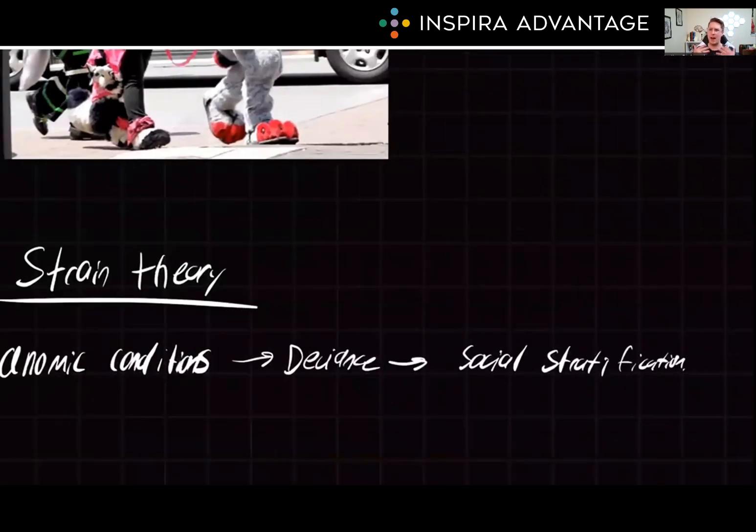And finally, we have strain theory that kind of comes out of talking about anomie. Strain theory focuses on how anomie conditions can lead to deviance and in turn reinforce social stratification. When individuals feel disconnected from society or unable to achieve their goals through legitimate means, they may turn to deviant behavior. Crime. For instance, a person who cannot find a well-paying job due to a lack of education might resort to criminal activities like robbing a bank to make ends meet.